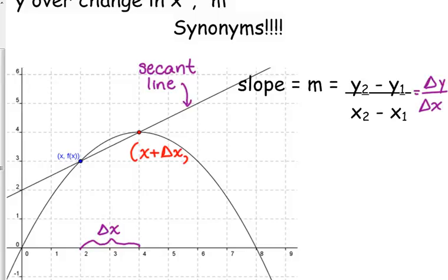Okay? Trying to relate it back to the original point. So, the x-coordinate is x plus delta x, and the y-coordinate is f of x plus delta x. So, I plug that new x-coordinate, x plus delta x, into my f function, and it will give me the y value.